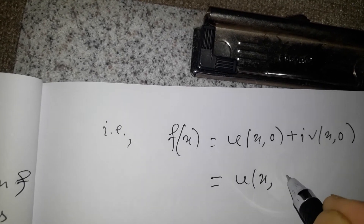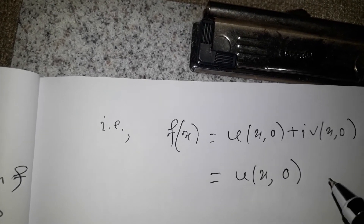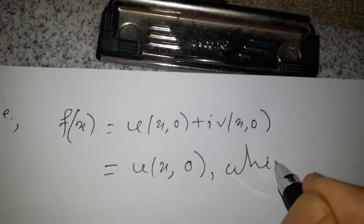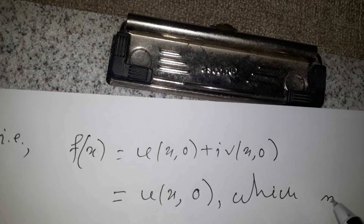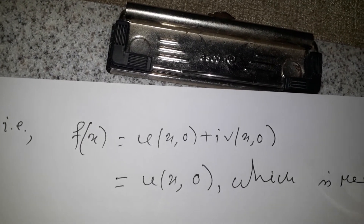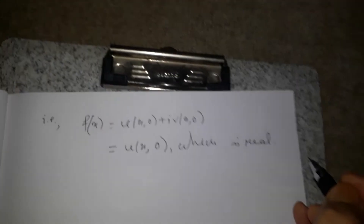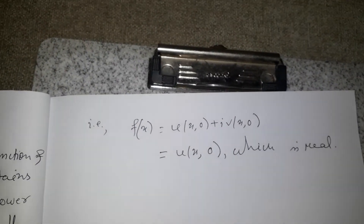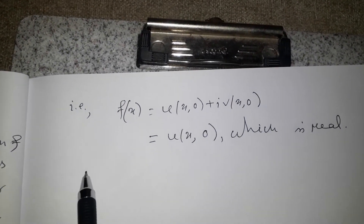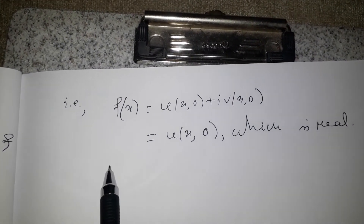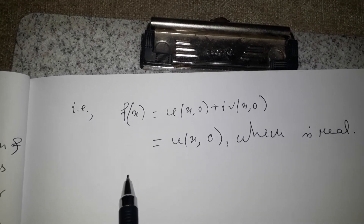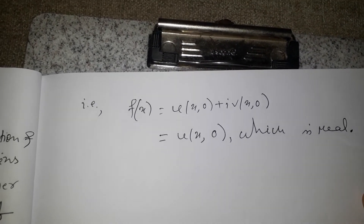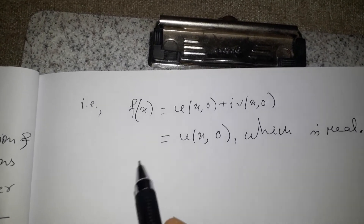Therefore f(x) = u(x, 0) + i·v(x, 0) = u(x, 0), which is real. This proves that f(x) is real for each point x on the line segment, completing the proof of the other part of the theorem. Thus we have established the Schwarz Reflection Principle.